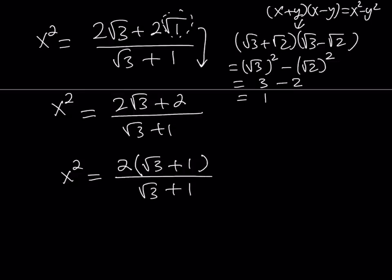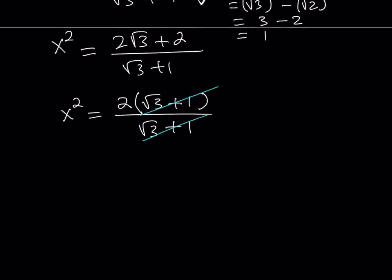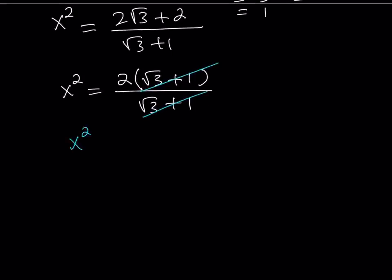So what does that tell you? Well, it tells you that you can simplify this. So root 3 plus 1 does not equal 0, so we can go ahead and cross these out. And from here, we get a really nice simple expression, or equation I should say, x squared equals 2.